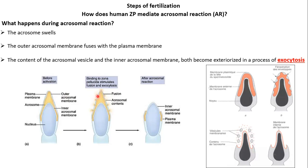After the acrosome fuses with the cytoplasmic membrane of the sperm cell, the content of the acrosomal vesicle is released to the outside — this is exocytosis. The content of the acrosome and the inner acrosomal membrane both become exteriorized. What remains is the inner acrosomal membrane, now exposed to the outside. This process of exteriorizing the inner acrosomal membrane and releasing the acrosomal content is called exocytosis.